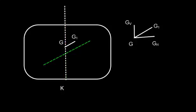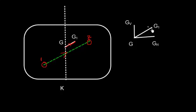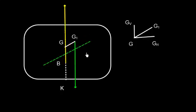Now let us consider the scenario where a weight is shifted from position one to position two. The center of gravity of the ship will also shift in that direction from G to G1. GG1 will have two components: the horizontal component GGH and the vertical component GGV. The weight force will shift from G to G1, and this will make a list movement.